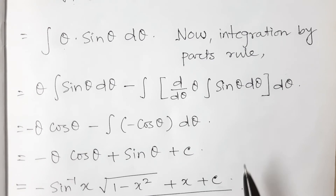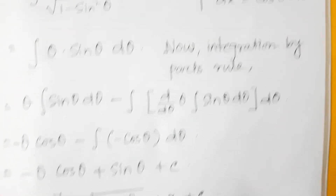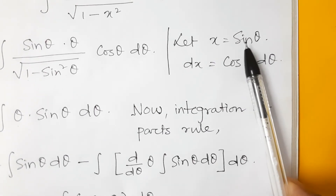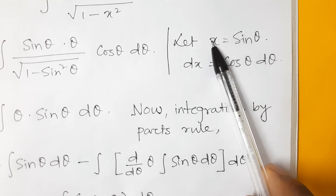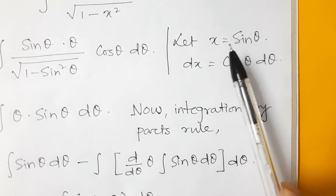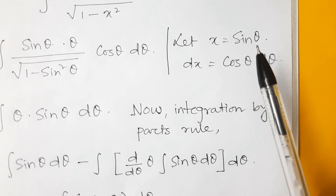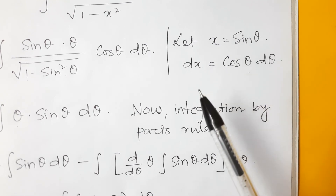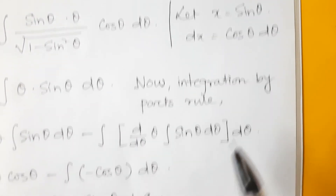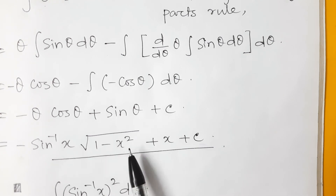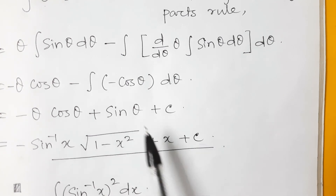Now we need to go back to x. We replace θ with sin⁻¹(x), because x = sin θ means θ = sin⁻¹(x). For cos θ, we use sin²θ + cos²θ = 1, and substituting sin θ = x gives cos θ = √(1 − x²). And sin θ is simply x. Since this is an indefinite integral, we add the constant C.